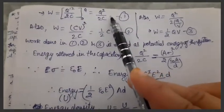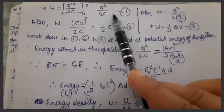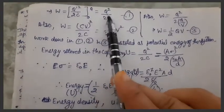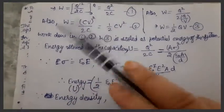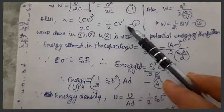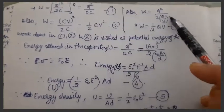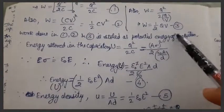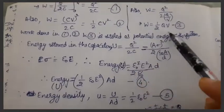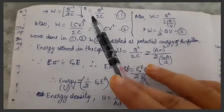This work done will be the energy stored. Also, I can write q as c into v, so we get another expression: c v square by 2. Similarly, I can write c as q by v, and I get a third expression.